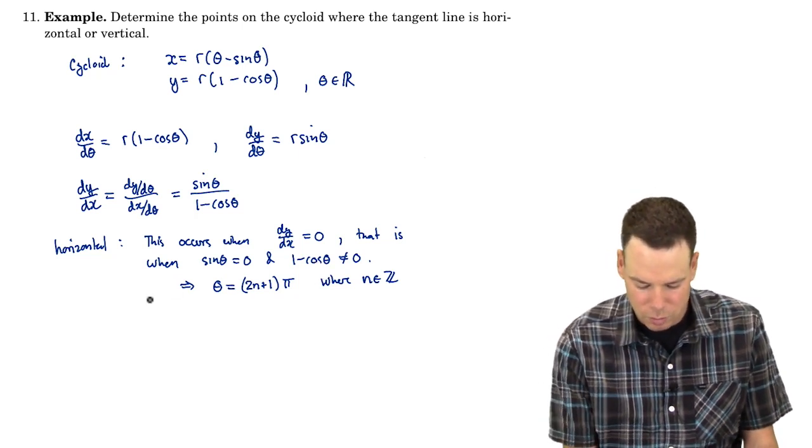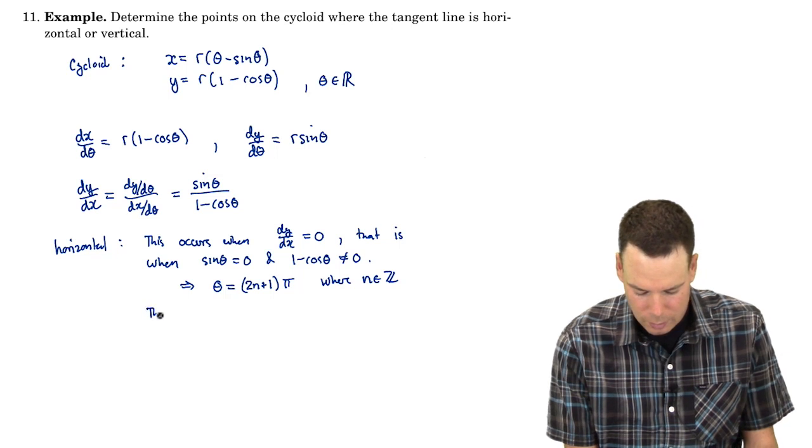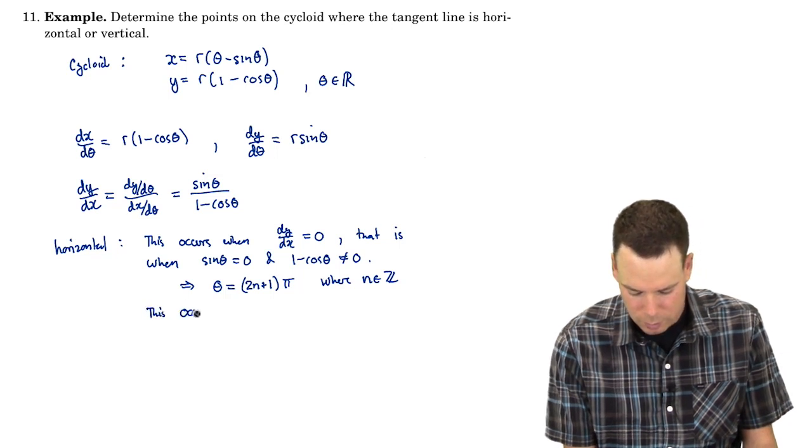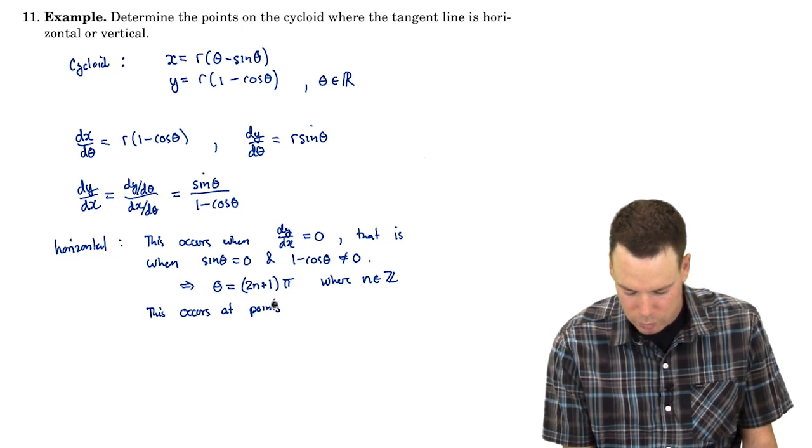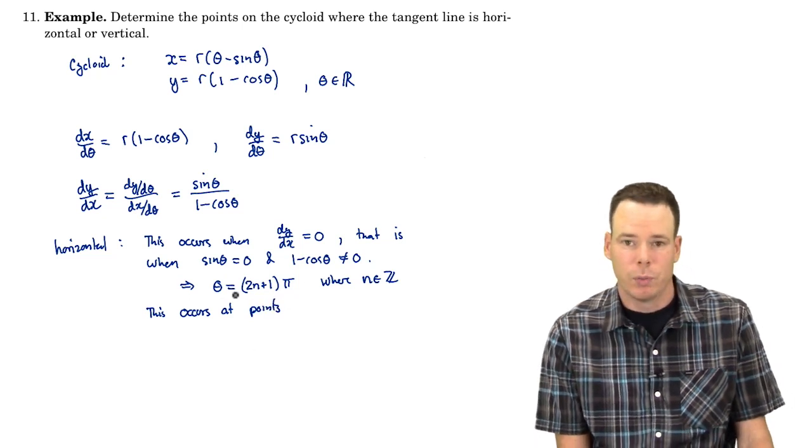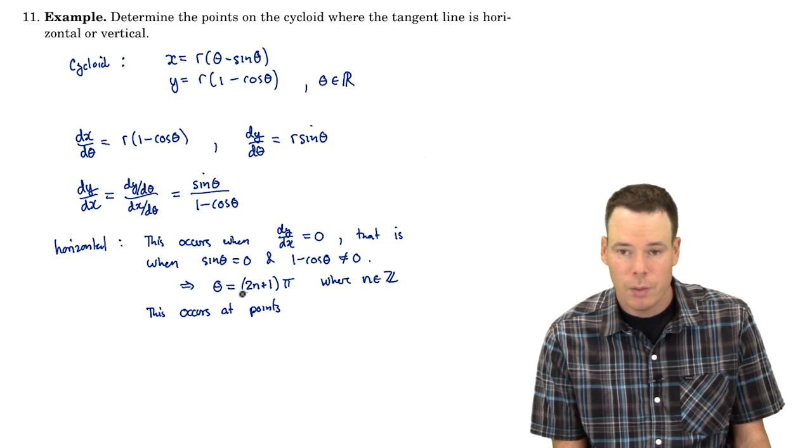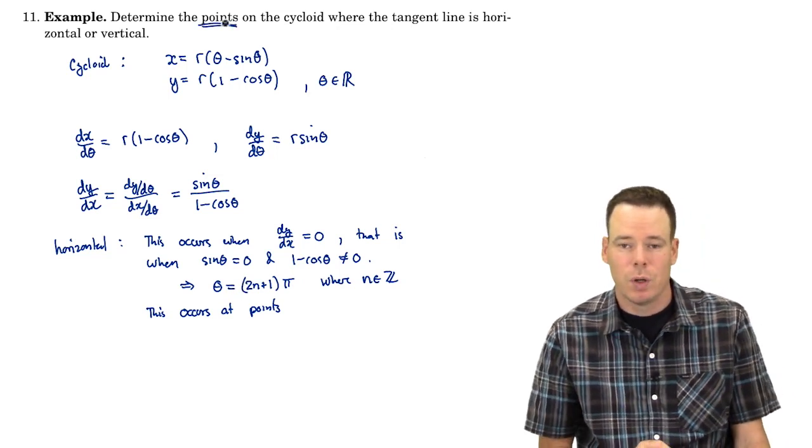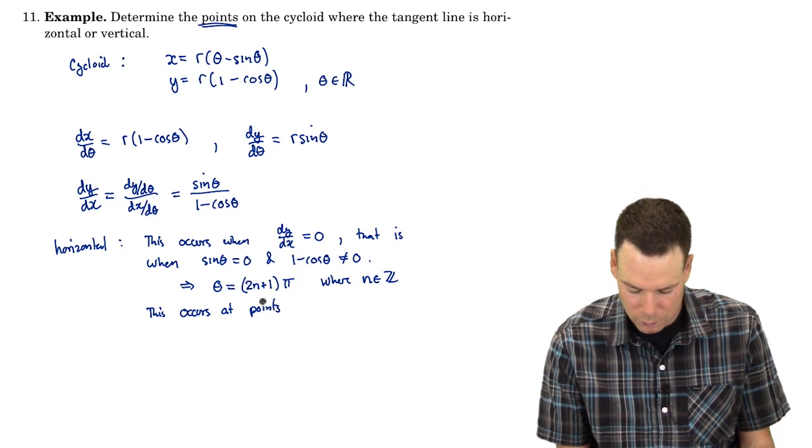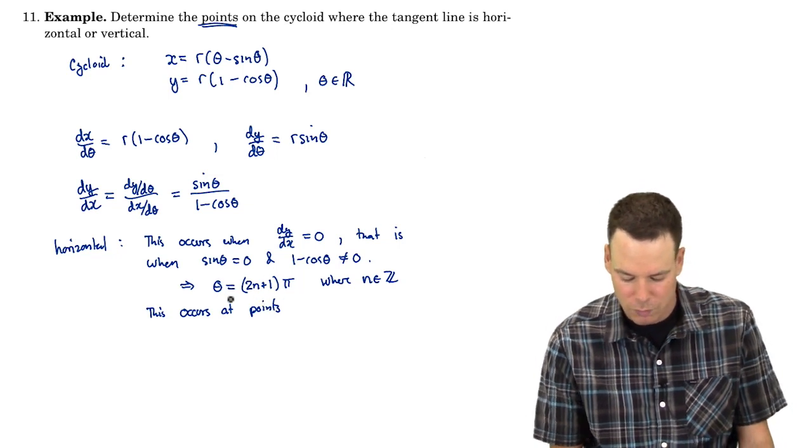So those are where the tangent line is horizontal and this occurs at the points. Notice right now we've got the value of the parameter for which the tangent line is horizontal. I want the actual points on the curve. We need to find the actual points, so the xy coordinates for the point on the curve, not the parameter value for the point on the curve.